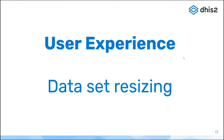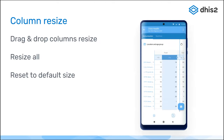Let's start with the user experience. The first feature I want to introduce is dataset resizing — specifically the resizing of columns. This is a request we have received from the first version of the application. We made some interim improvements, particularly on the first column where we have the name of the data element, but we have now implemented what we think is a final solution.